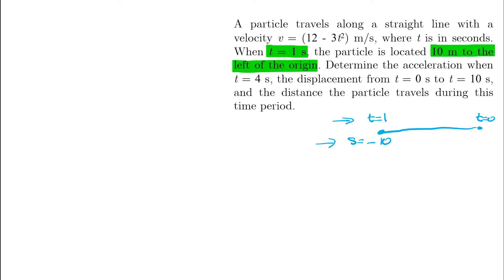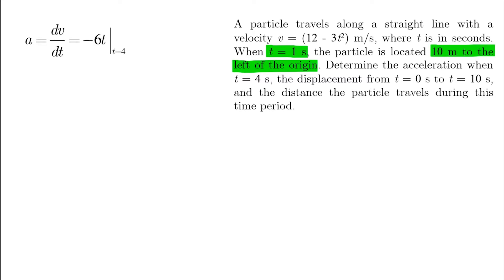The first part of the question — finding the acceleration at T equals 4 — is very straightforward. Take the derivative of V, which is dV over dt, evaluated at T equals 4. The result is minus 24 meters per second squared, and this means the acceleration is directed to the left because our assumed positive direction is to the right.